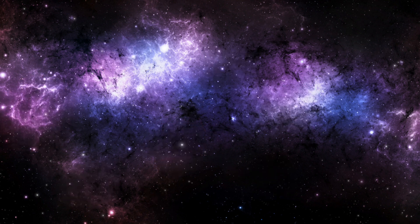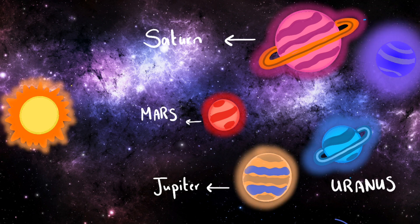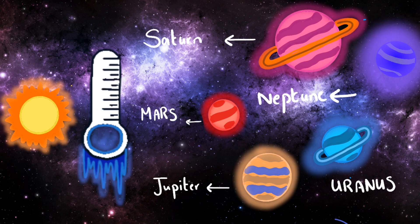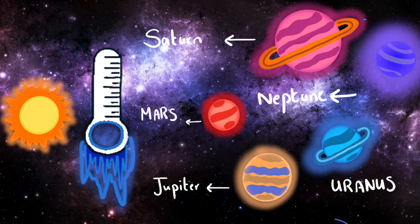Distant planets such as Mars, Jupiter, Saturn, Uranus, and Neptune are considered to be not only cold planets but freezing ones. Thus life is impossible there.